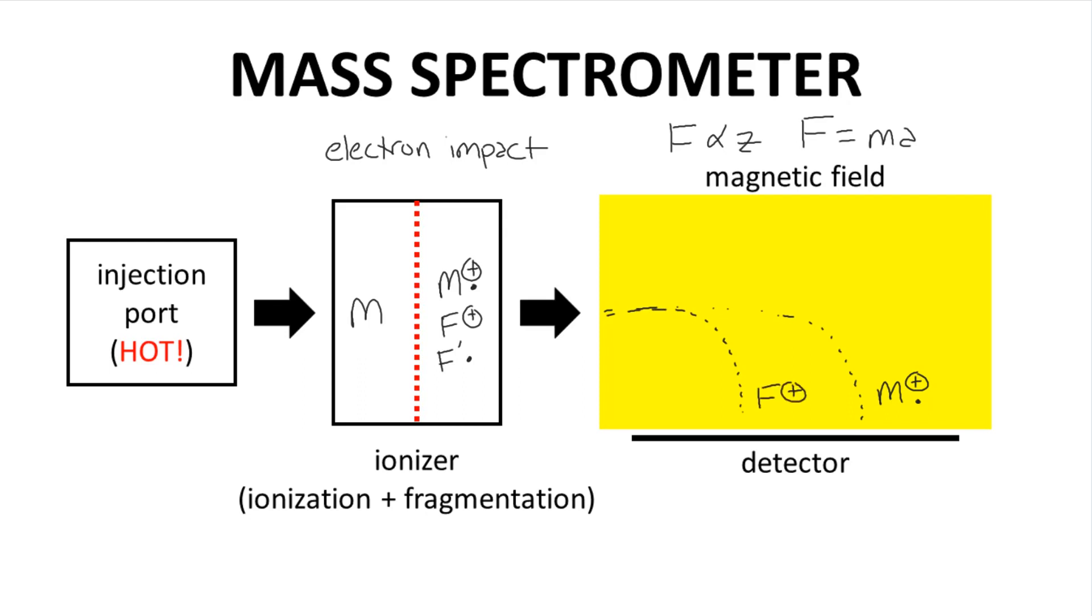The mass spectrometer contains a detector that can measure the impact of charged particles. The position of the impact on the detector determines each particle's mass-to-charge value, or m/z. Based on where the charged particle impacts, the mass of the particle can be determined. Therefore, the MS can determine the mass of the parent ion as well as the fragment cations.